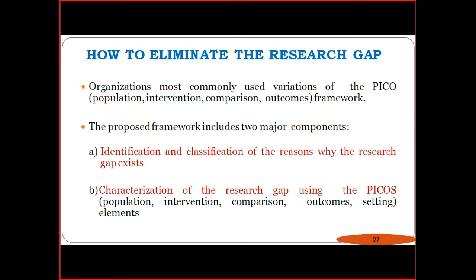The most commonly used framework is the PCOS framework: Population, Intervention, Comparison, and Outcomes. This is related to the identification and classification of results — why the research gap exists — and the characterization of the research gap. Using PCOS, we can analyze the population, intervention, comparison, outcomes, and setting elements. First, we must understand why the research gap exists.